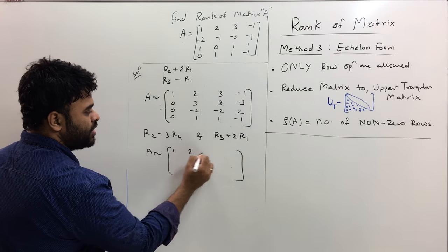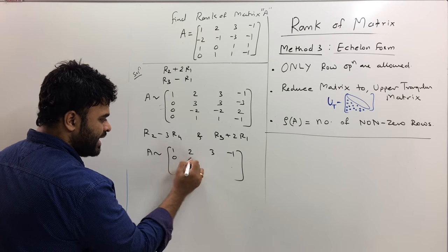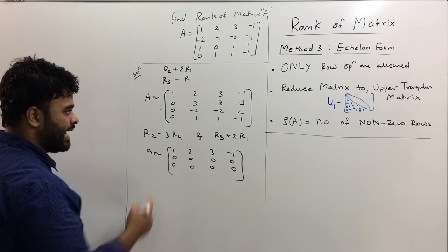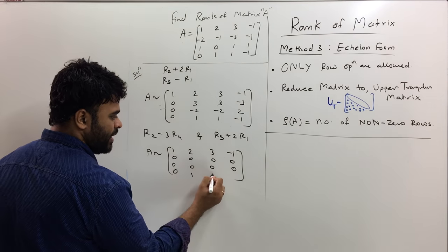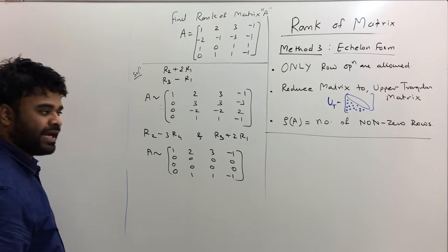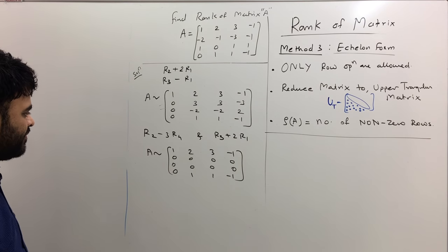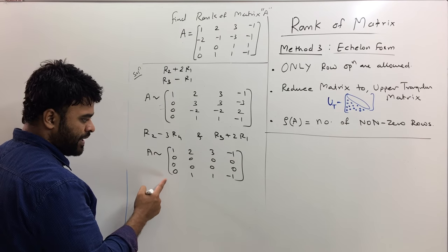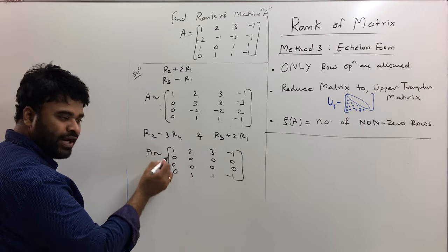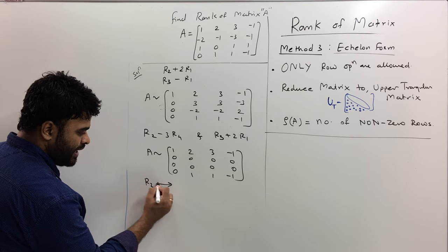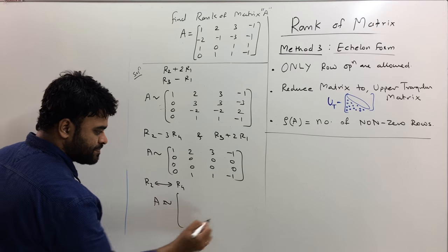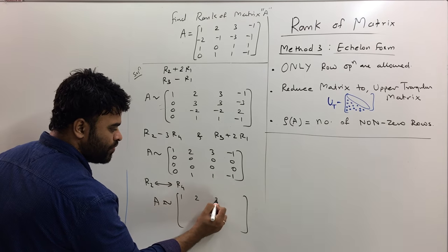A gets reduced to 1, 2, 3, minus 1 as it is. Now R2 and R3 both will become zero, and the last row will remain as it is: 0, 1, 1, minus 1. This is my simplified form of matrix A. Now one last step I have to perform to make it upper triangular matrix: I can just switch R2 and R4.